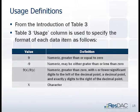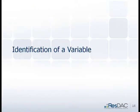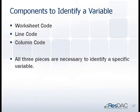Here's a table to define the Usage variable. Now let's get to the specifics of how you identify a variable. There are three pieces you need to identify any one variable. It's not like a flat file where number of beds is labeled at the top and everything below is number of beds. You have to know the worksheet code, the line code, and the column code to pull out anything. All three pieces are necessary for every single variable in the data file.